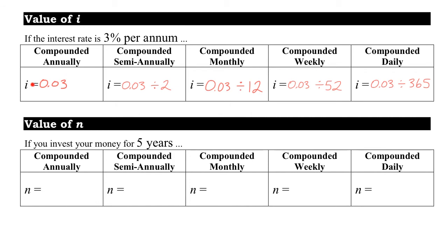Just as we adjusted the interest rate, we have to do the same for N. For example, if you invest for 5 years and the interest is compounded annually — once per year — that's 5 compounding periods, so N is 5. But if compounded semi-annually — twice per year for 5 years — that's 10 times total. You multiply the number of years by the number of compounding periods per year.